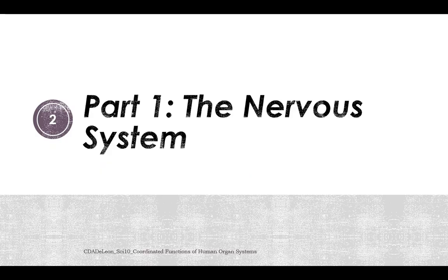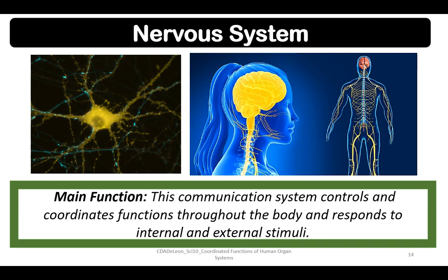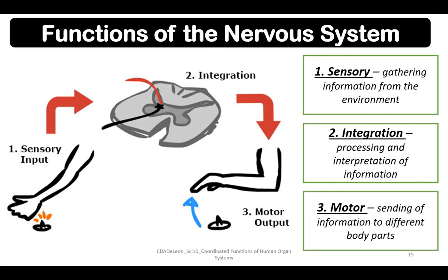Now let's discuss the nervous system further. The main function of this organ system is communication — it is a communication system that controls and coordinates functions throughout the body and responds to internal and external stimuli. Important functions of the nervous system are sensory, integration, and motor. In the second video, we will discuss these three functions further.